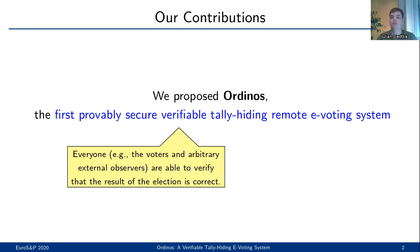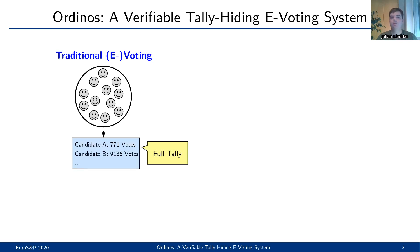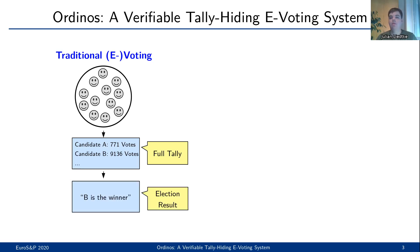The next property is tally-hiding. To explain what tally-hiding is, let me first give you an intuition on how traditional e-voting systems and paper-based elections work. We have a set of voters who pass their votes and send them to the balloting board. Then the votes are counted. The result of this is what we call the full tally. Typically, in traditional votings, the full tally is revealed, and everyone is able to compute the election result — for example, which candidate received the most votes — based on the full tally.